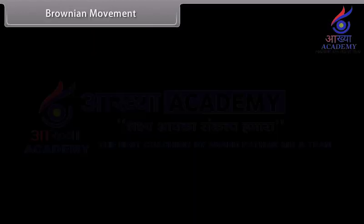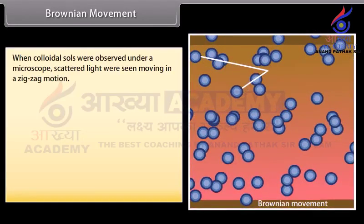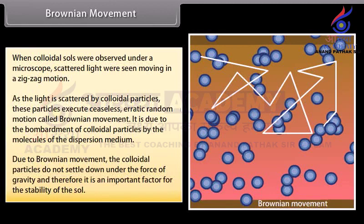Brownian movement. When colloidal sols are observed under a microscope, scattered light can be seen moving in a zig-zag motion. As the light is scattered by colloidal particles, these particles execute ceaseless, erratic, random motion called Brownian movement. It is due to the bombardment of colloidal particles by the molecules of the dispersion medium. Due to Brownian movement, the colloidal particles do not settle down under the force of gravity, and therefore it is an important factor for the stability of the sol.